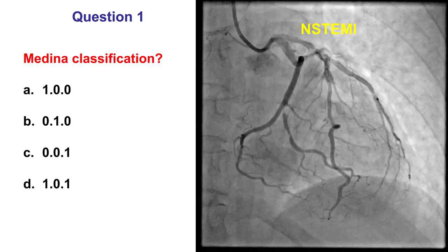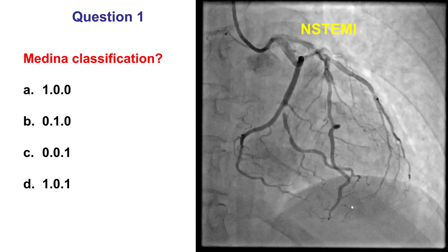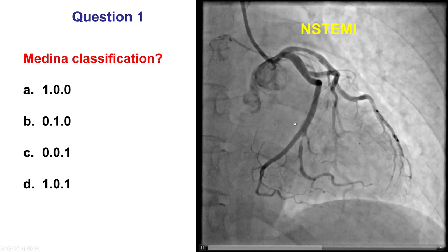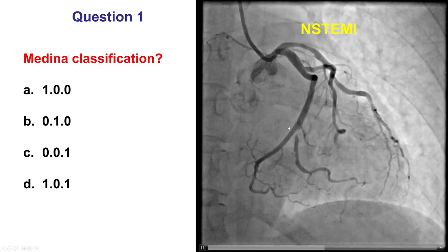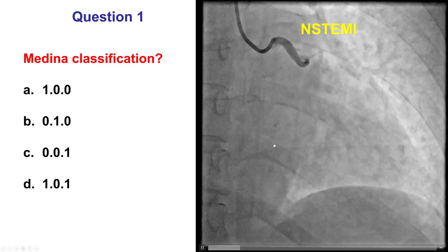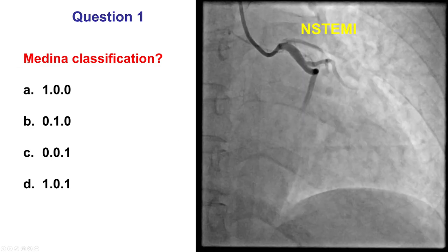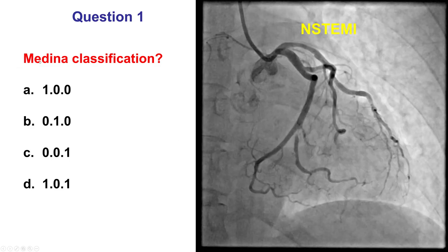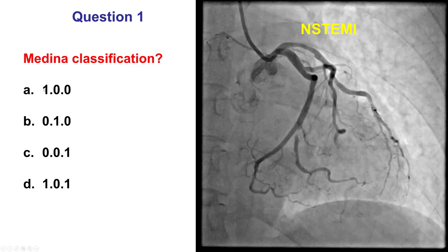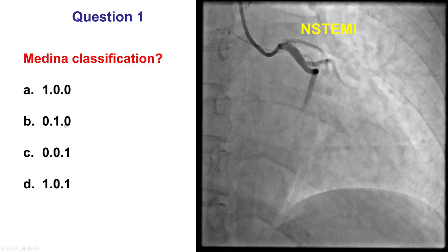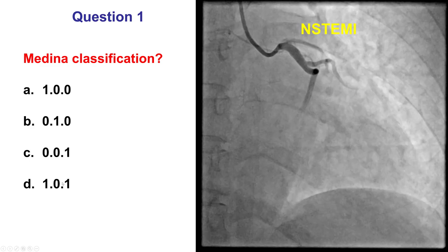The patient presented with non-ST elevation myocardial infarction and was found to have an ulcerated lesion at the origin of the second obtuse marginal branch. The first question is: this is a bifurcation, but what Medina classification is this bifurcation? The options are 1-0-0, 0-1-0, 0-0-1, or 1-0-1.